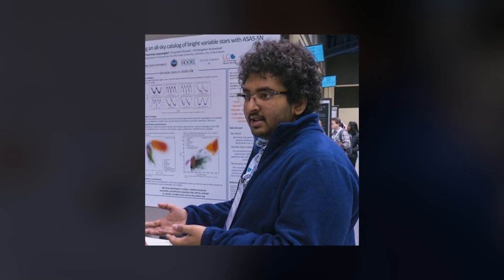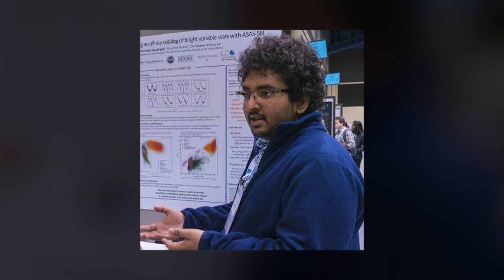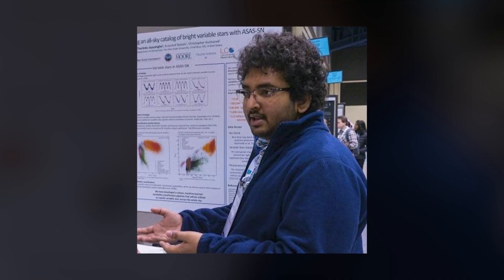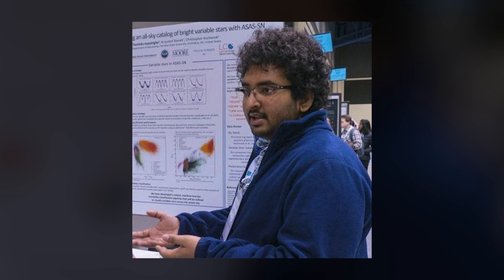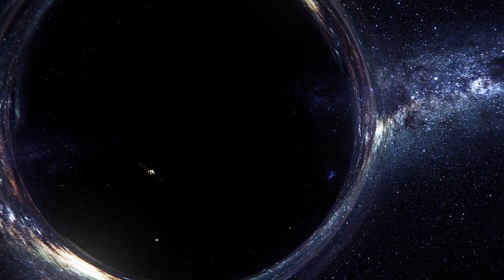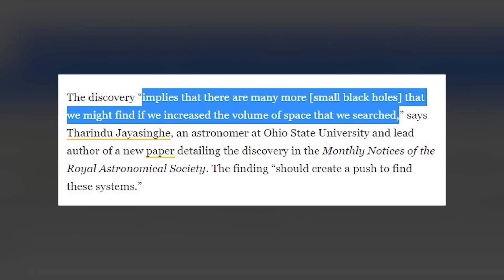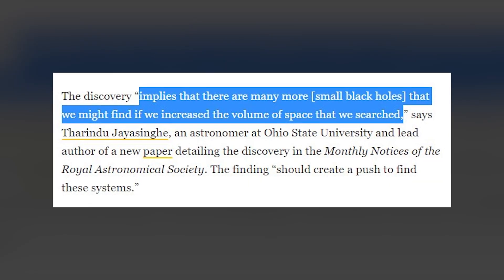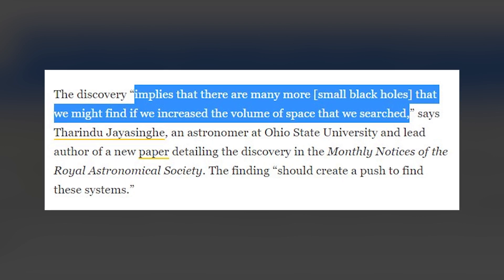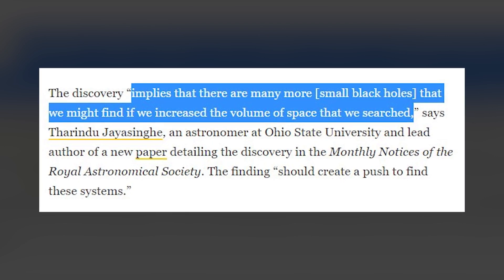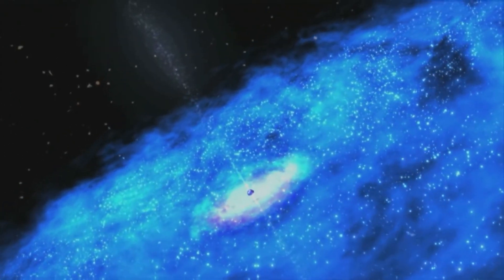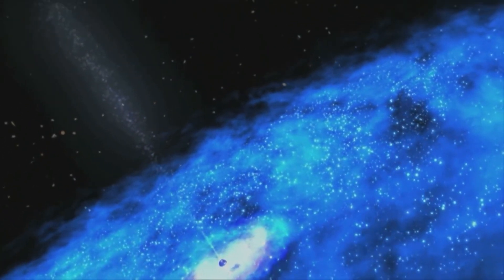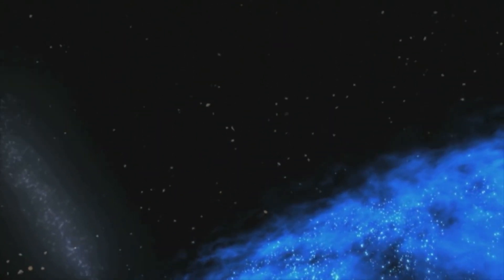According to Thirindu Jayasinghe, an astronomer at Ohio State University and lead author of a new paper detailing the discovery in the Monthly Notices of the Royal Astronomical Society, the discovery of this small black hole just 1,500 light years away implies that there are many more small black holes that should be found if astronomers expand their search and cover more volumes of space. According to astronomer Thirindu, who ironically has a name similar to a character from a Star Wars movie, the finding of this small black hole so close to Earth should definitely compel other astronomers to find more small black holes in our galaxy and elsewhere.